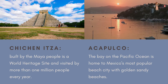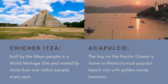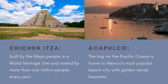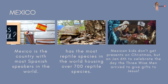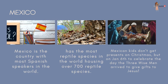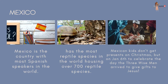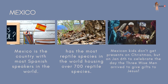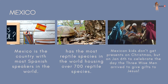Chichen Itza, built by the Maya people, is a world heritage site visited by more than 1 million people every year. Acapulco Bay on the Pacific Ocean is home to Mexico's most popular beach city with golden sandy beaches. Mexico is the country with the most Spanish speakers in the world. Mexico also has the most reptile species in the world, housing over 700 reptile species. Mexican kids don't get presents on Christmas — instead, on January 6th they celebrate the Day of the Three Wise Men, who arrived to give gifts to Jesus.